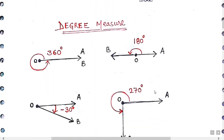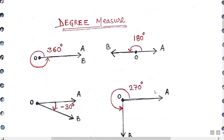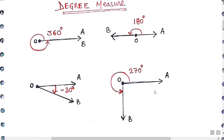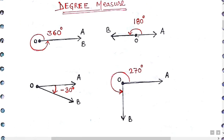Now, how to measure degree? We already studied this concept in 7th or 8th class. This angle is 180 degrees, and if the circle is complete, this angle is 360 degrees. This angle is minus 30 and this angle is 270 degrees.